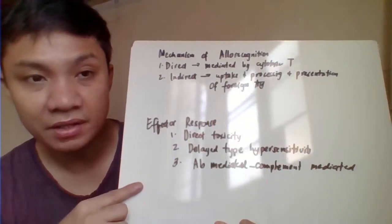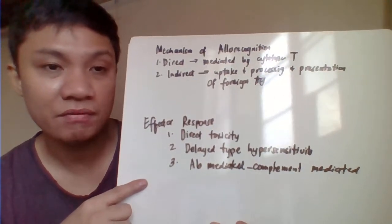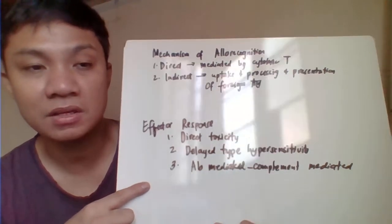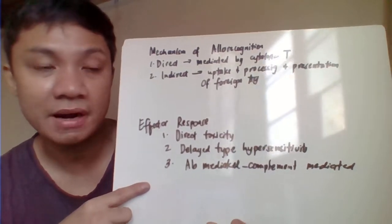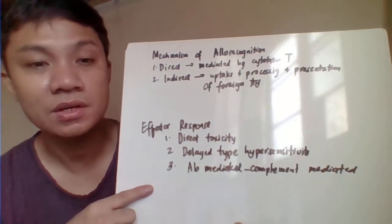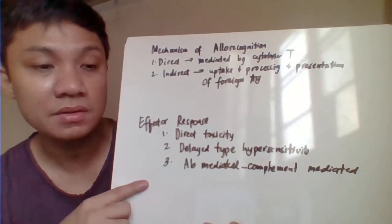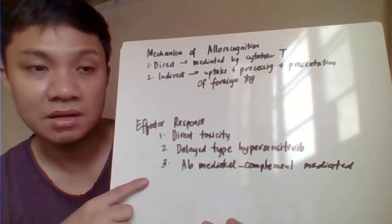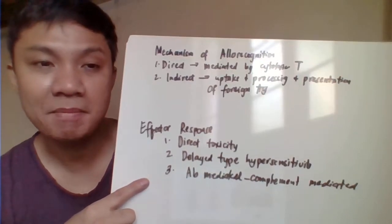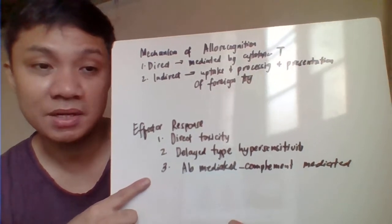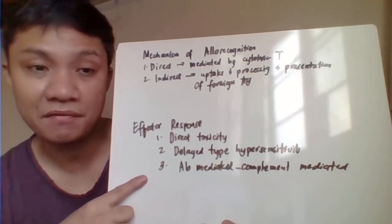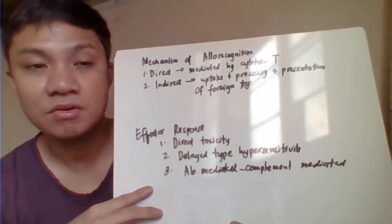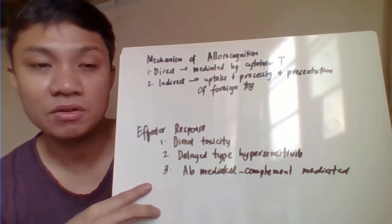The effector responses to incompatibility include: first, direct allo cytotoxicity mediated by cytotoxic T cells leading to destruction of grafted tissue; second, delayed hypersensitivity reaction; and third, binding of antigen-antibody complex due to allo recognition, which activates complement and leads to tissue destruction.